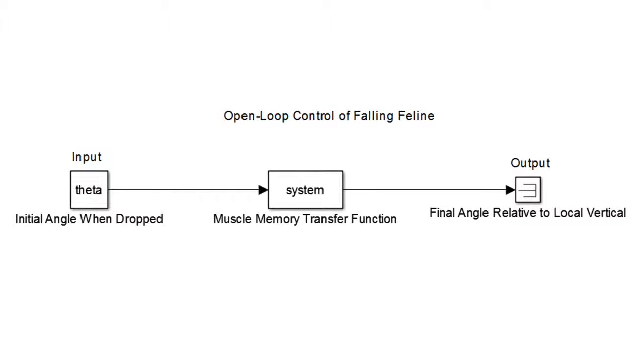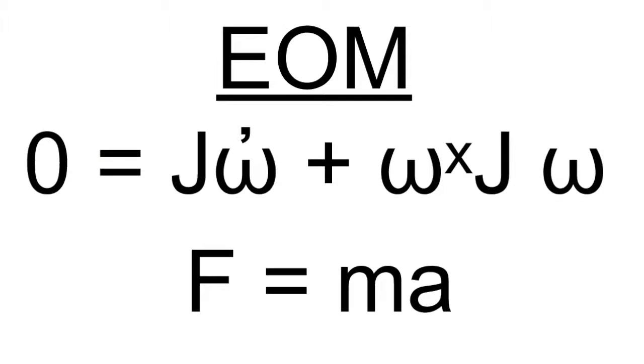Here, we have the Simulink model defining the open-loop control system of our cat. It's open-loop because it's executed through muscle memory, and therefore, there's no feedback incorporated. Our system is only governed by two equations, the first being the sum of the torques, and in this case, it is zero because there's no external torque. The second being F equals MA, where force is the force of gravity acting on the cat, and acceleration is acceleration due to gravity.